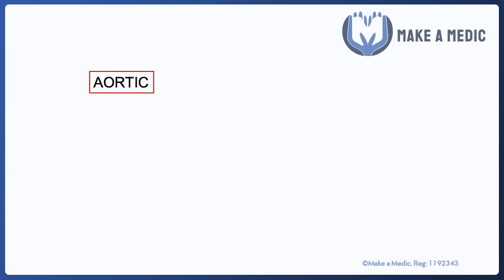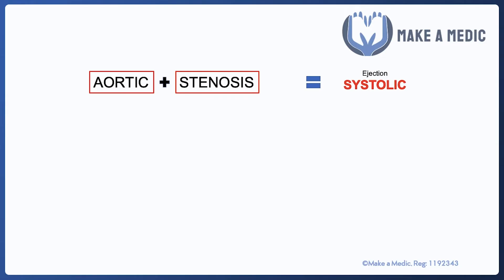The only thing you need to remember is that aortic stenosis is a systolic murmur. That's the only thing you absolutely have to rote learn — the rest of it can be figured out just from this bit of knowledge.